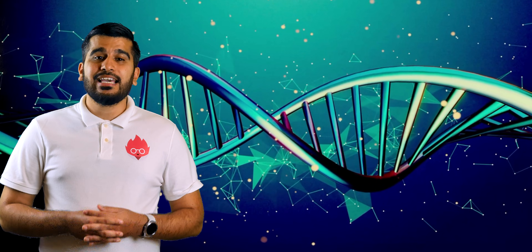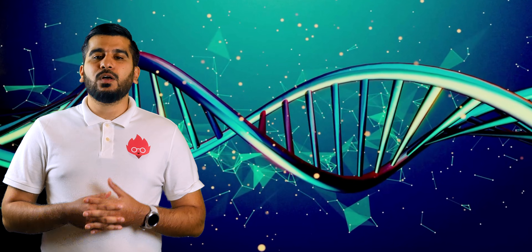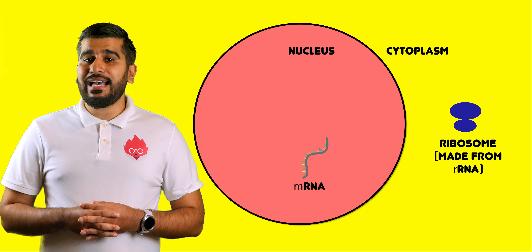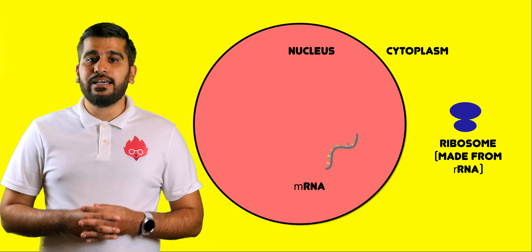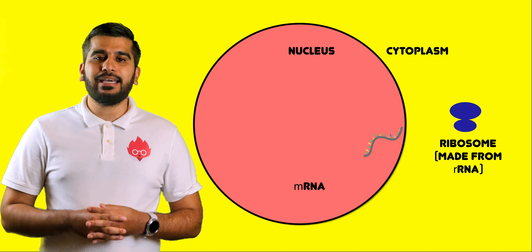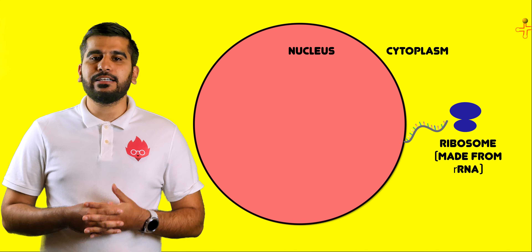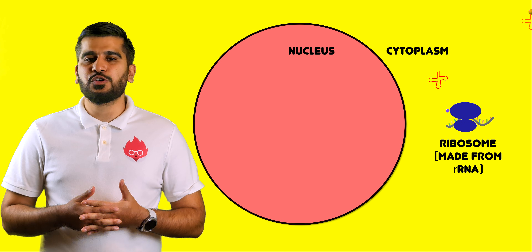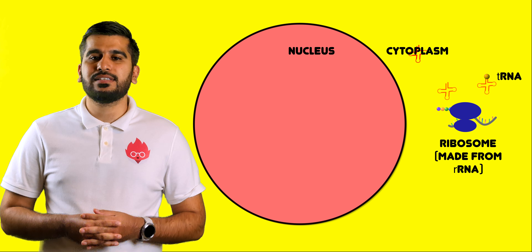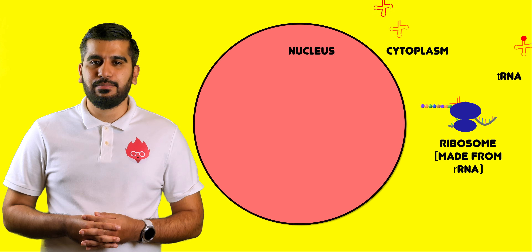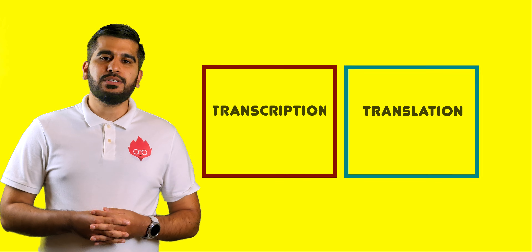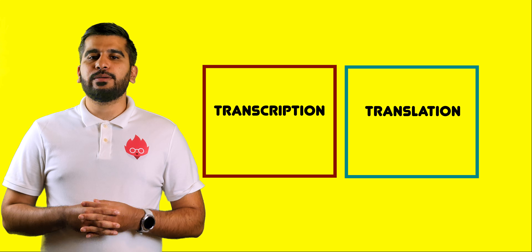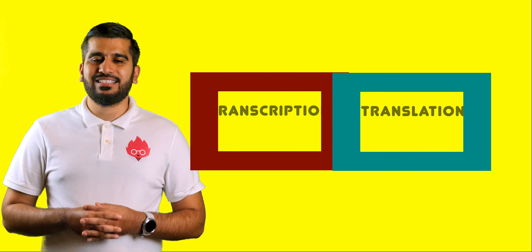DNA is a very long molecule found in the nucleus. It doesn't actually leave the nucleus, so we need a mechanism for reading our DNA and taking these instructions to parts of the cell where proteins are assembled. These two stages are called transcription and translation.